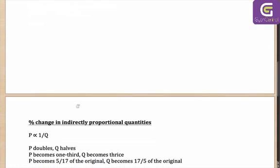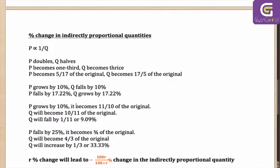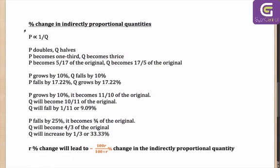To continue, let's look at the percentage change in indirectly proportional quantities. Let's say P is inversely proportional to Q. Then what it means is: if P doubles, Q halves. If P becomes one-third of the original, then Q becomes three times the original. You might be thinking that if P grows by 10%, Q will fall by 10%.